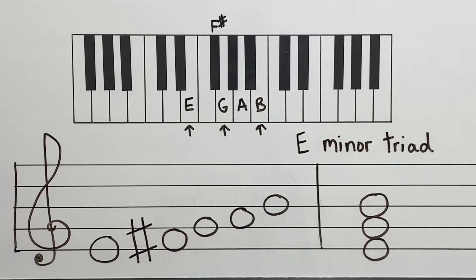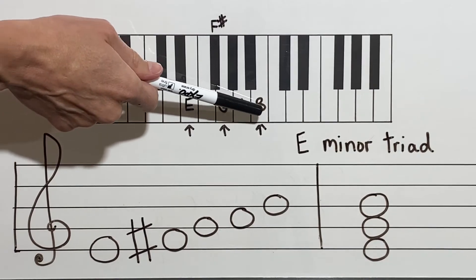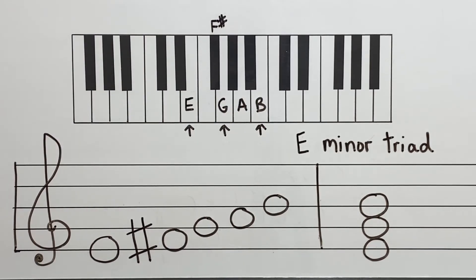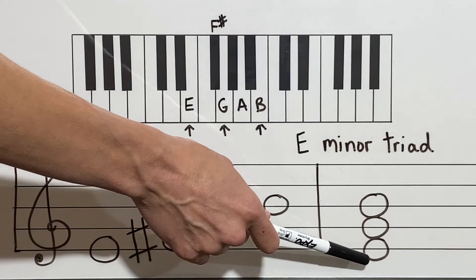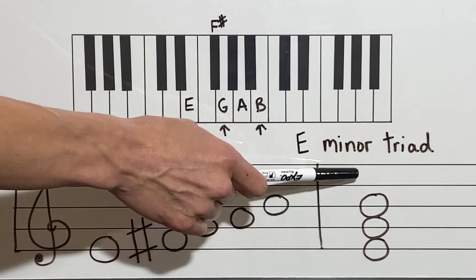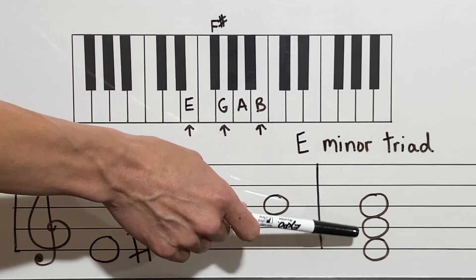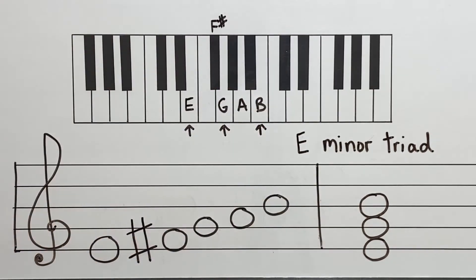Our E minor triad first starts with the E minor five finger pattern on our keyboard. I have E, F sharp, G, A, and B, with arrows on E, G, and B — that is our root, our third, and our fifth. When I play this on the piano, I will be playing E, G, and B — that's my E minor triad. On our musical staff I have E, F sharp, G, A, and B. I take my root, my third, and my fifth to form my triad — a stack of lines, E, G, and B playing all three at the exact same time.